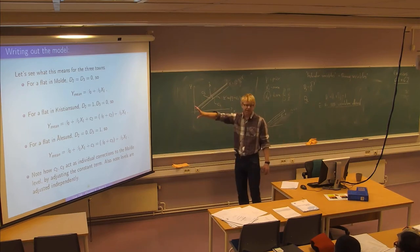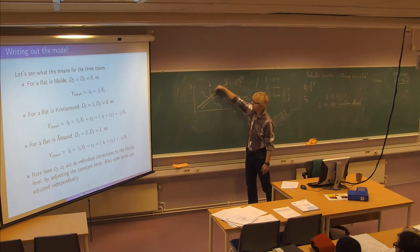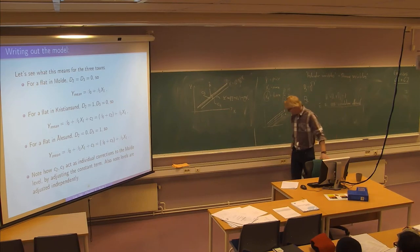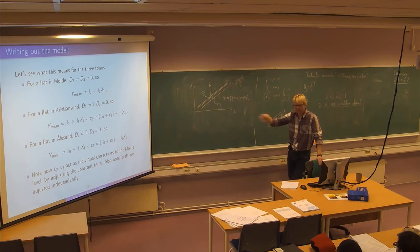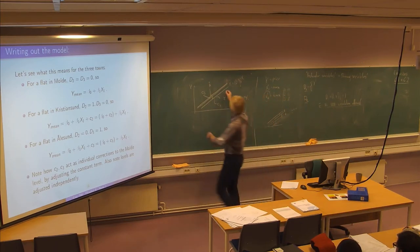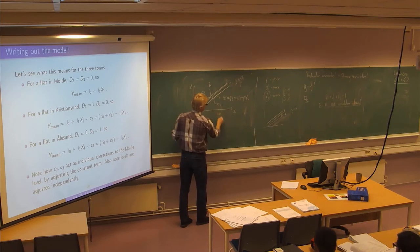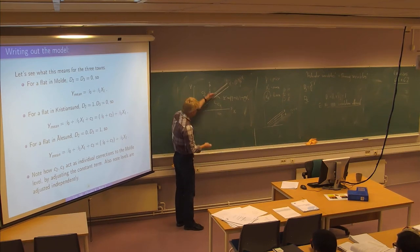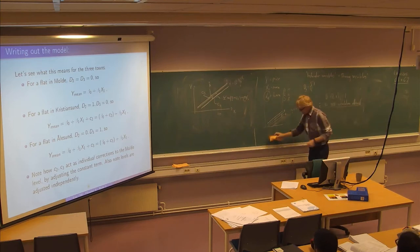In theory this accomplishes exactly what we wanted — to estimate individual corrections of the constant term in the model, so we can shift the relationship. And it will also improve the prediction power of the model. If I take a flat in Kristiansund I use the lower line, and if it's a flat in Molde that is 100 square meters I adjust my estimate upward. Given that these corrections are significant, it has to be a better predictive model.